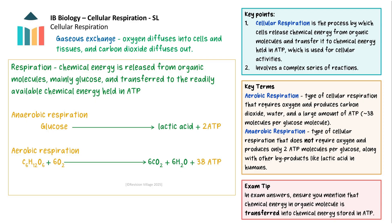Cells can carry out two types of cellular respiration: aerobic and anaerobic. Aerobic respiration, which requires oxygen, can be summarised by the equation: glucose plus oxygen goes to carbon dioxide plus water plus ATP. Approximately 38 molecules of ATP are produced in this process.